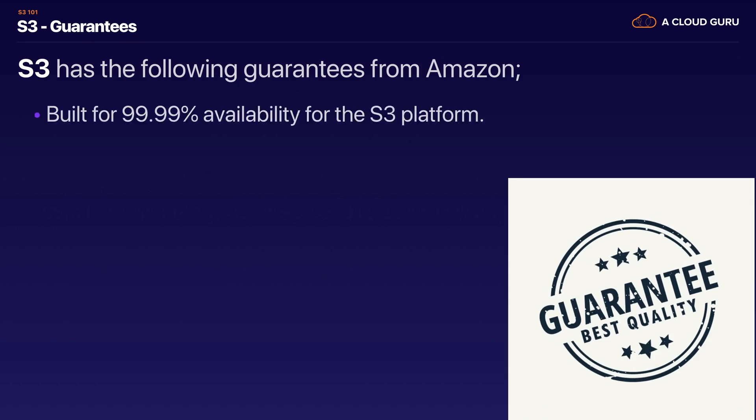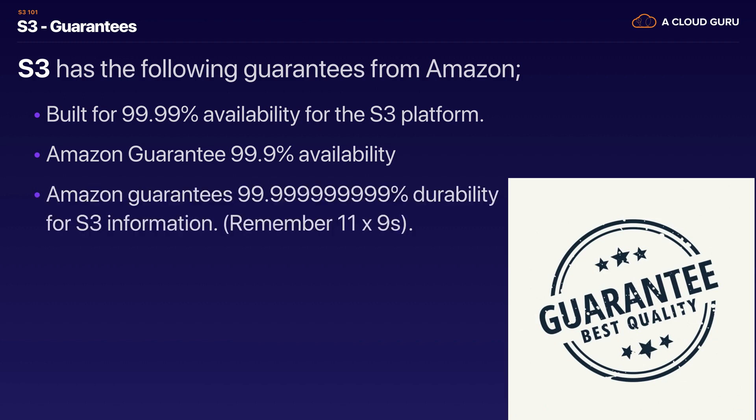What does Amazon guarantee from S3? It's built for 99.99% availability, and Amazon will guarantee 99.9% availability. Amazon also guarantees 11 nines of durability for S3 — meaning it's very, very unlikely that your object is going to be lost. It basically guarantees the durability of your object.